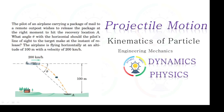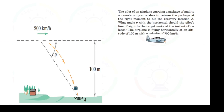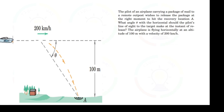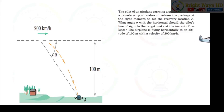In this example we'll discuss projectile motion. The question says that the pilots of an airplane carrying a package of mail to a remote outpost wish to release the package at the right moment to hit the recovery location. What angle does the line of sight to the target make at the instant of release? The airplane is flying horizontally at an altitude of 100 meters with a velocity of 100 kilometers per hour.